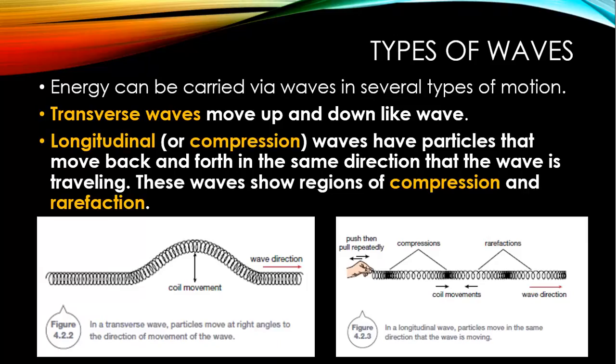Energy can be carried via waves in several types of motion. We've got two types of waves that we're going to look at. One's called a transverse wave, which moves up and down like a wave at the beach. You can see that in the diagram down the bottom left. We've got a longitudinal wave or a compression wave where particles move back and forth in the same direction that the wave is travelling. These waves show regions of compression and rarefaction. This is what you can see in the diagram at the bottom right there.